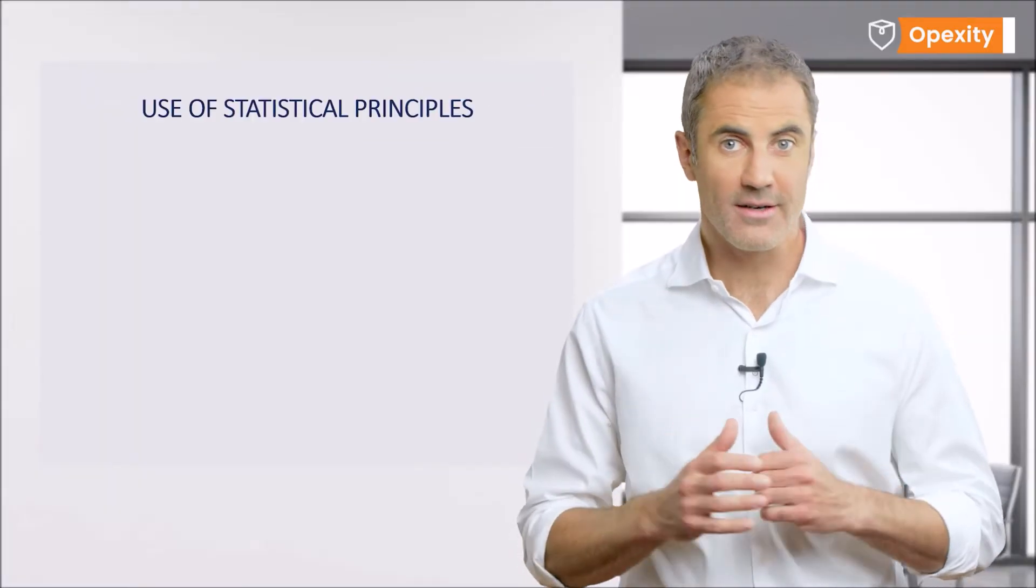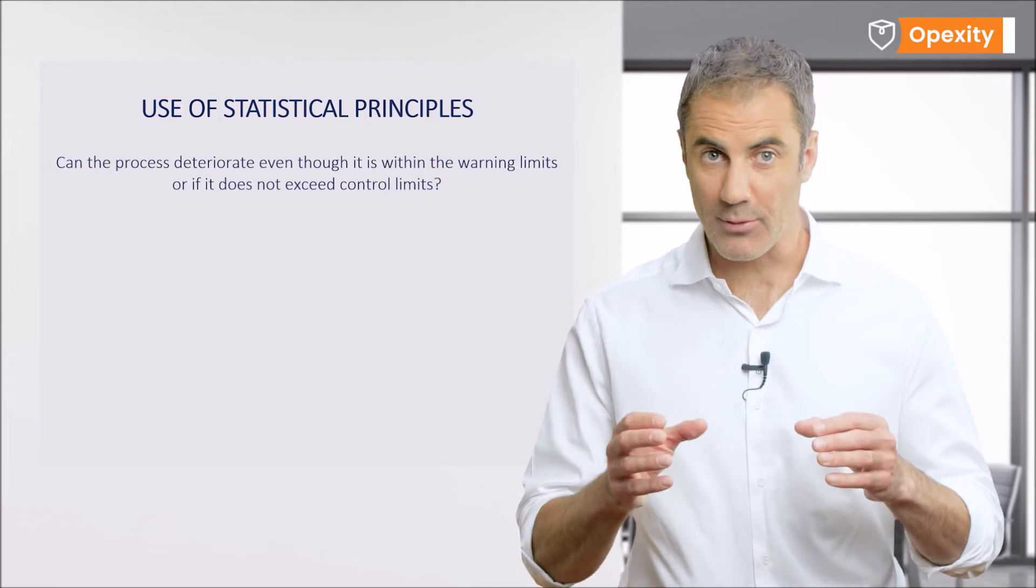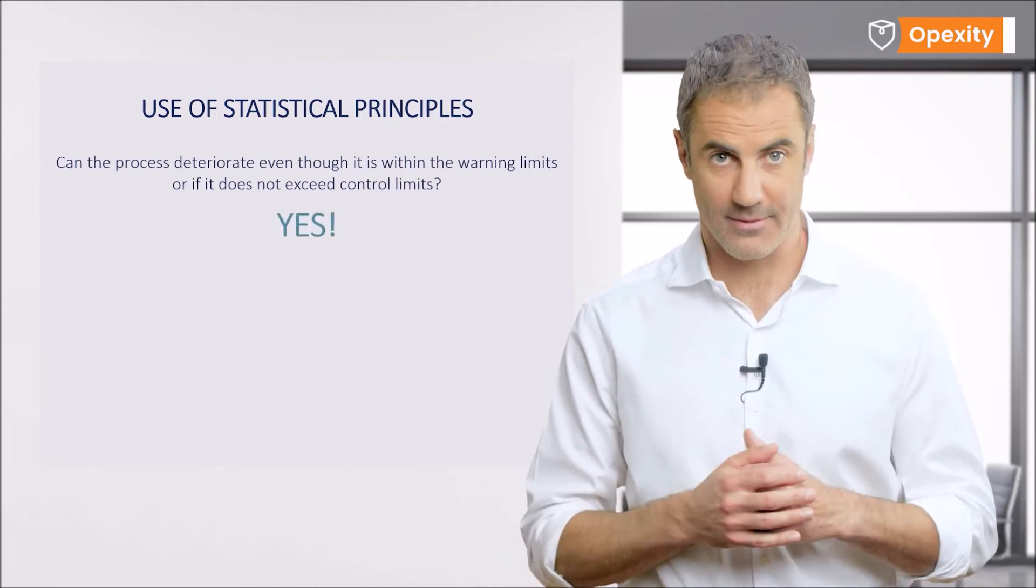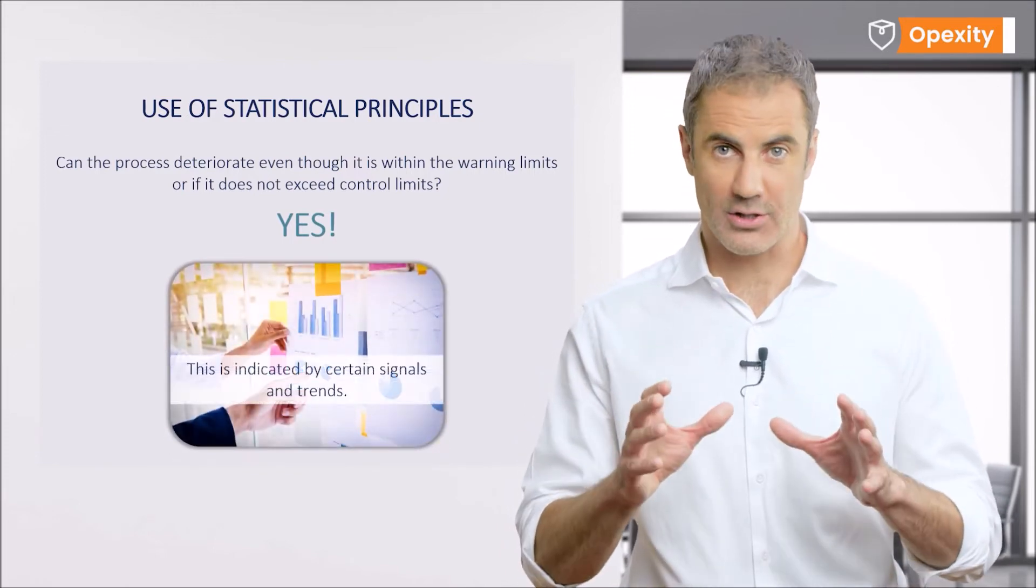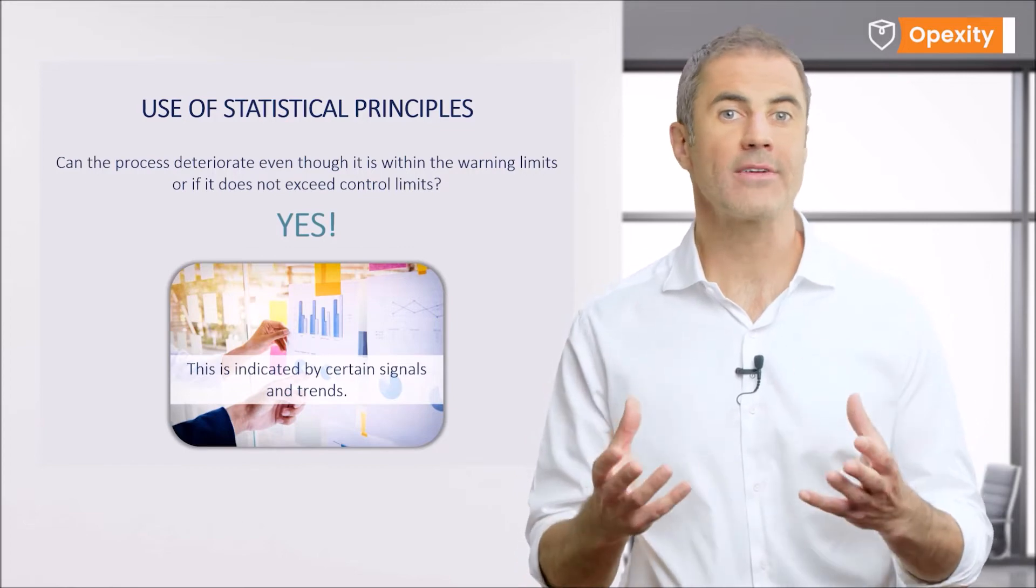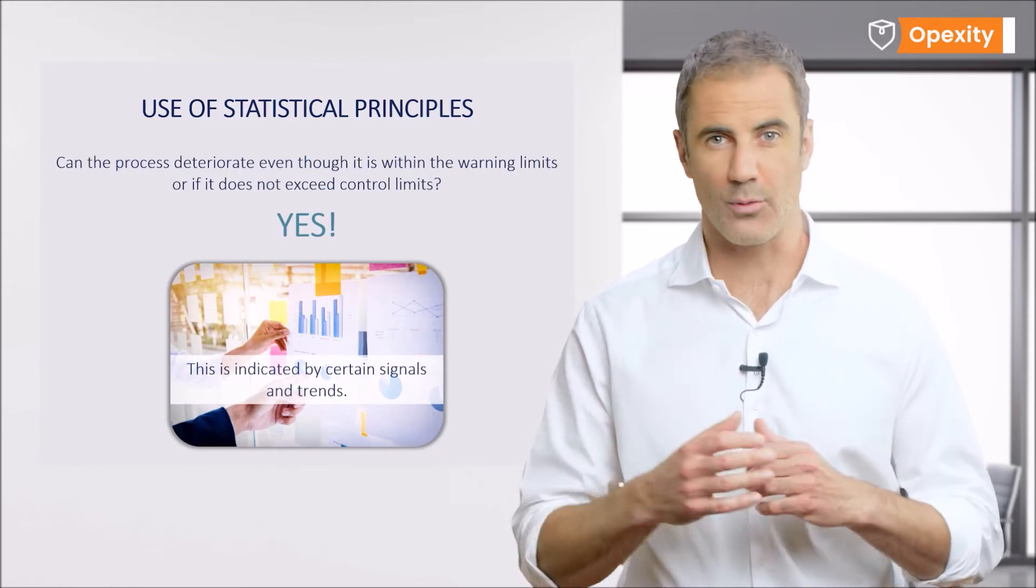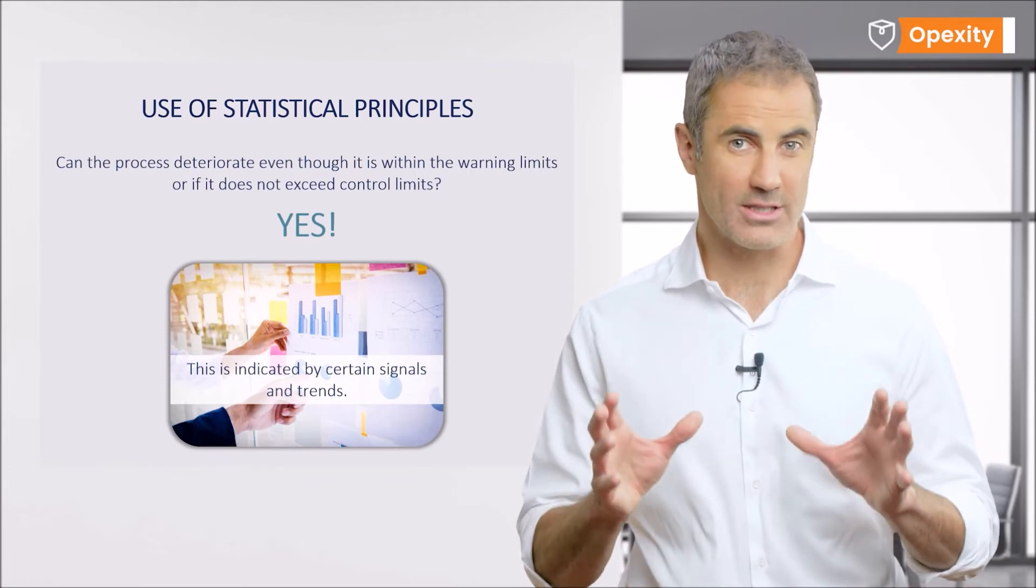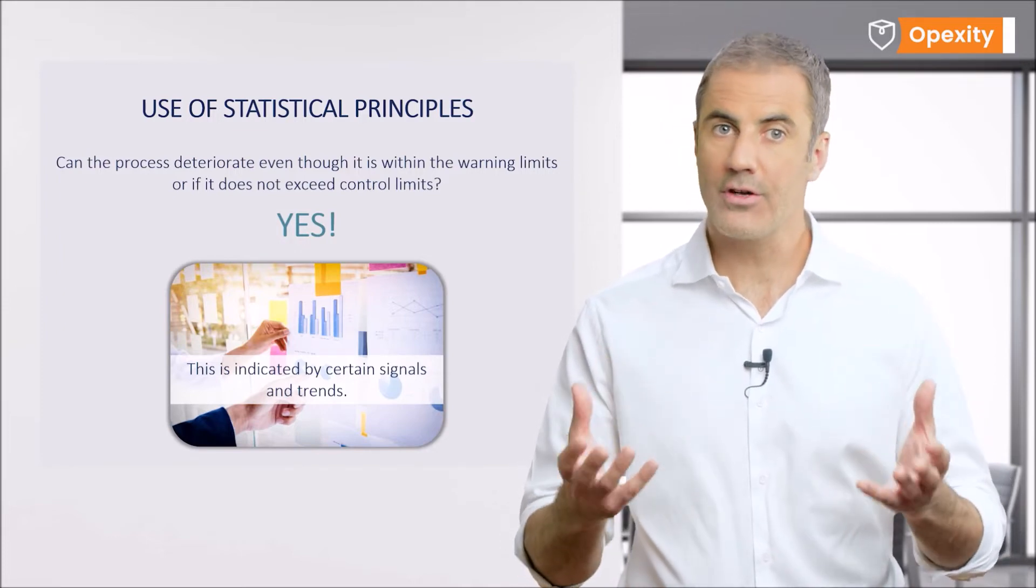What is interesting, it often turns out that a process that seems to be stable and is within the warning limits is not always correct either. Here we apply statistical principles that bring to light certain situations where the process apparently looks right but the results from the samples taken indicate otherwise. There are many similar situations in which this is so, so I have selected a few of the most common.